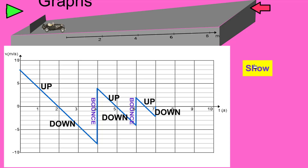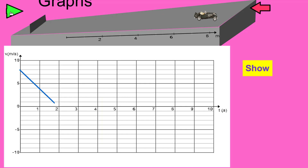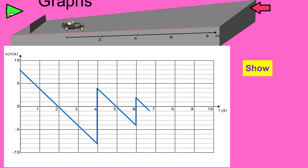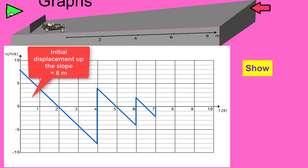The bounces on this graph are almost like vertical lines, but in real life they wouldn't be quite as vertical because the rubber sheet would bend a little and that would take a certain amount of time. This is an idealized situation. To recap the whole story: we set the car in motion, it rises up to the top of the slope, rolls back down, and there's a bounce, bounce, and bounce. The area of the first triangle gives you the displacement up the slope — two times eight is 16, half of 16 gives us eight meters.